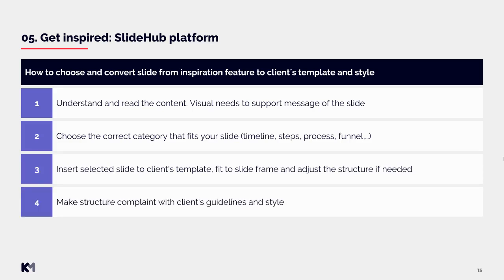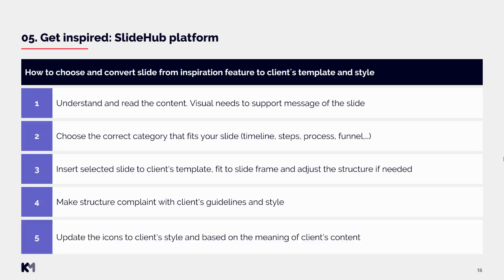You must make sure the structure is compliant with the client's guidelines and style — that means adjusting text box margins, colors, and fonts. The majority of slides on the inspiration platform are in a filled style, so if your client uses an outline or more airy style you will need to adjust accordingly. You will also need to update the icons to the client's style based on the meaning of the content, since these slides contain only lorem ipsum text — you take the client's content and insert it into the slide.